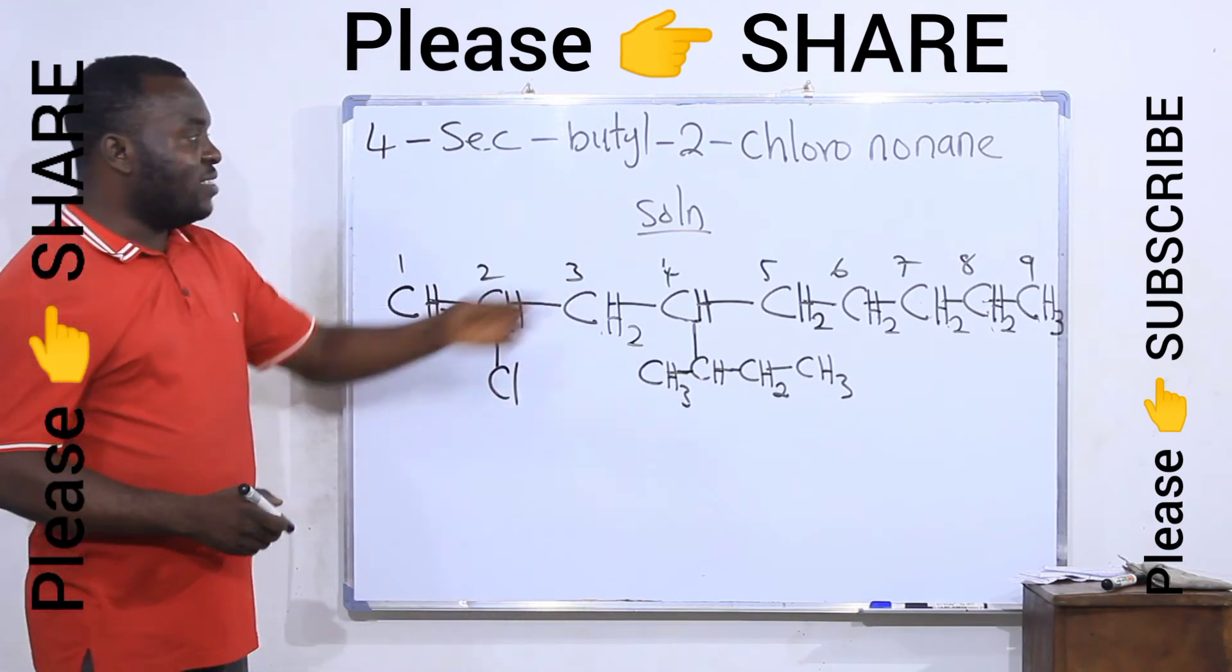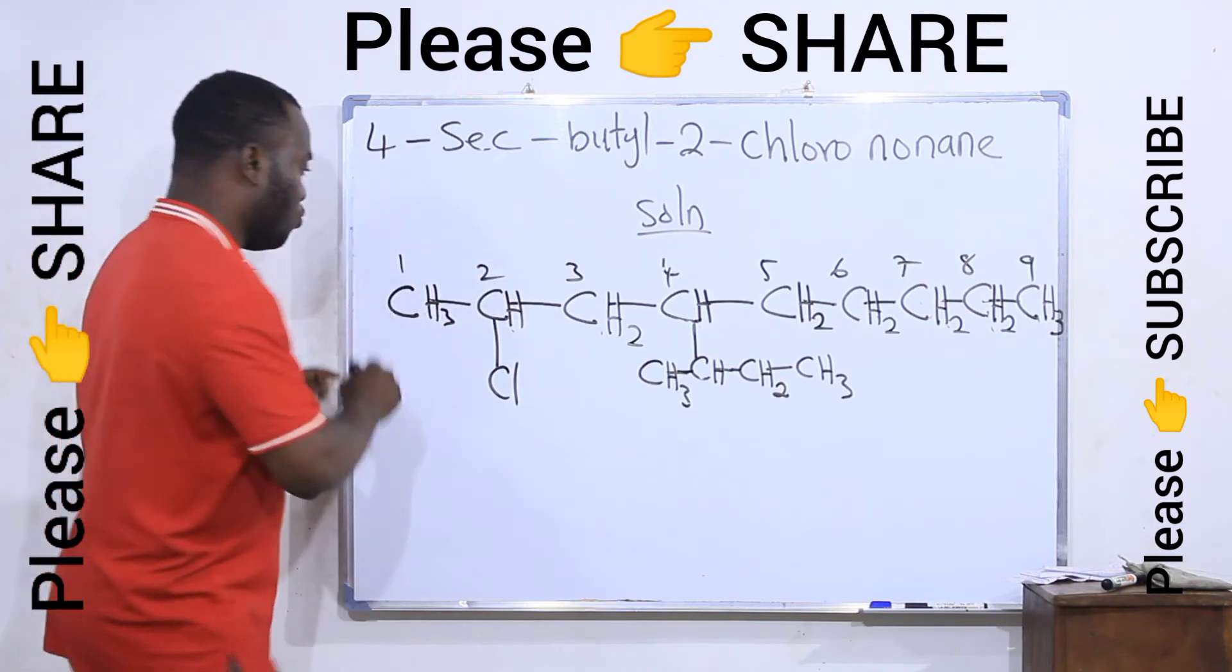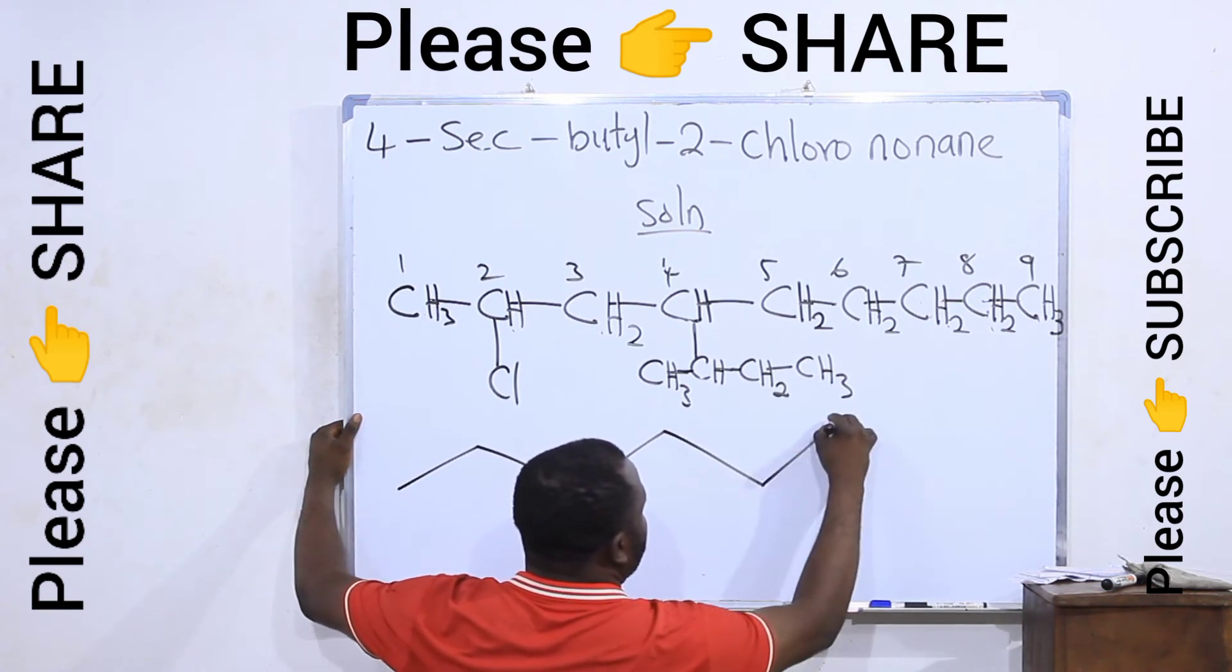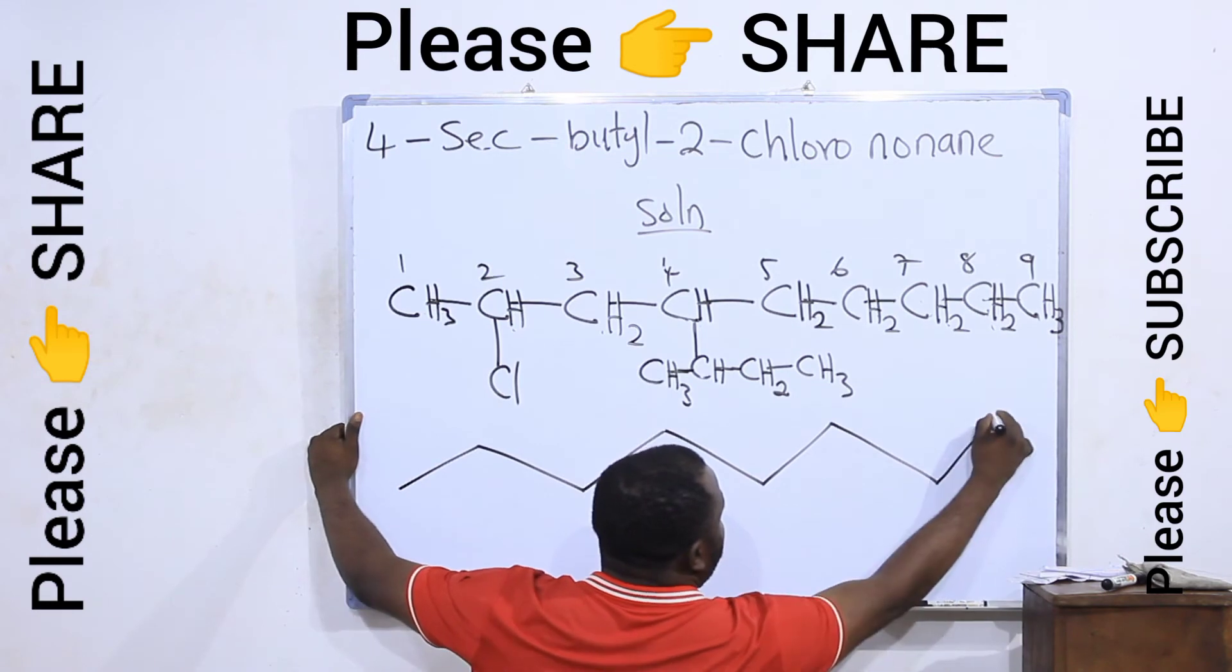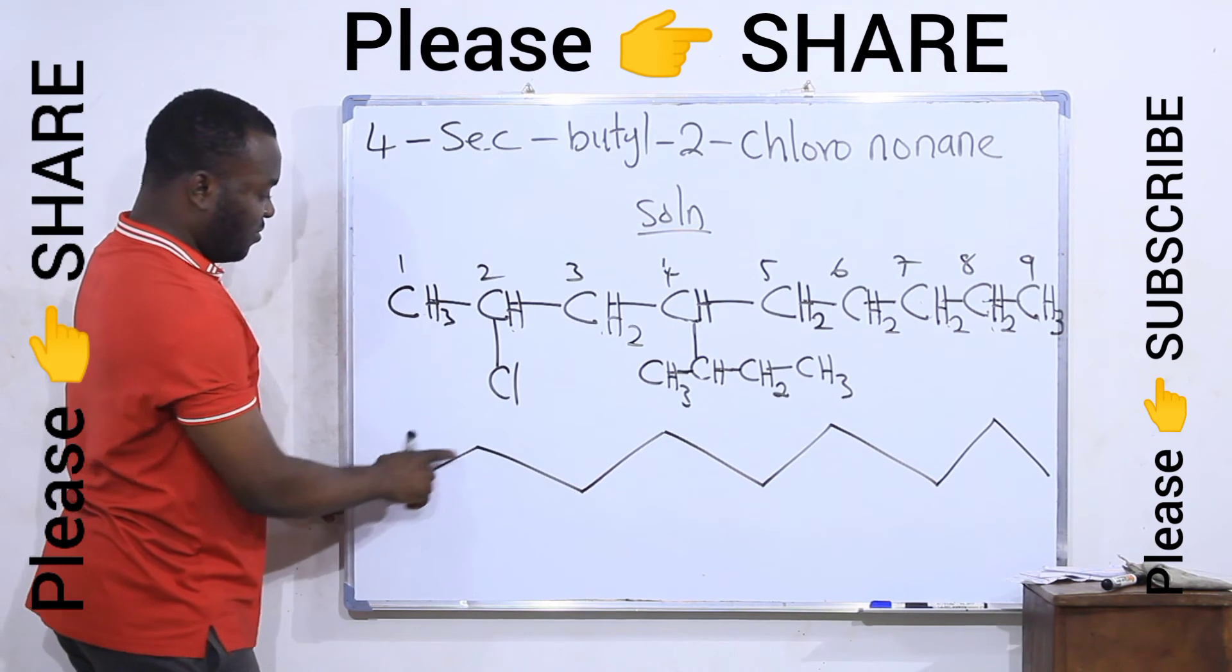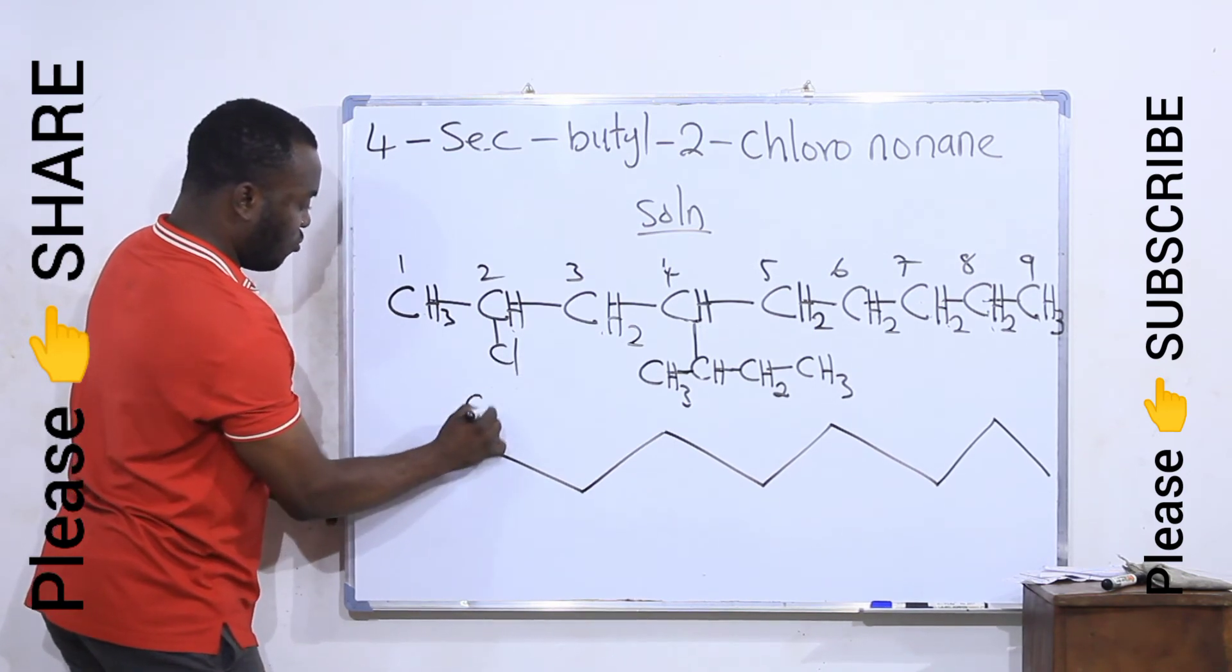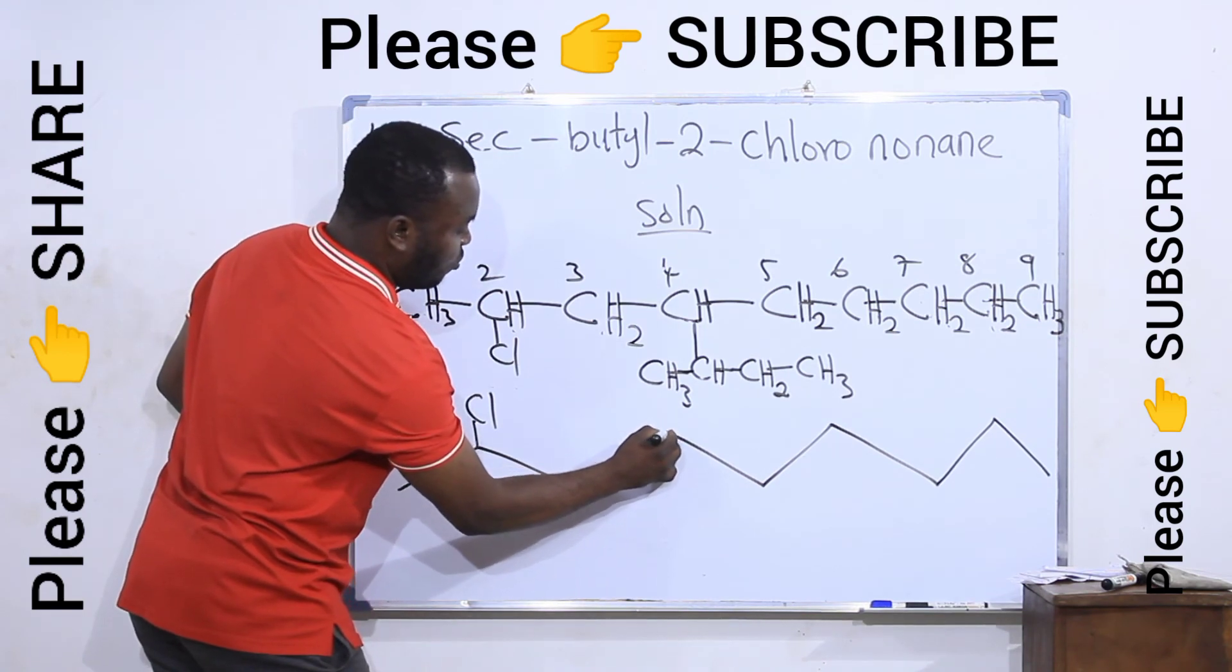But we can rewrite this in the skeletal form. Let's draw this in the skeletal structure to be nine carbons nonane, which is like this. This is one, two, three, four, five, six, seven, eight, and nine. Now this is first, this is second. At position two, I will put chlorine. Here I will attach chlorine. One, two, three, four. At position four, here I will attach sec-butyl.